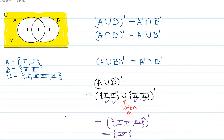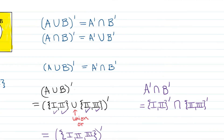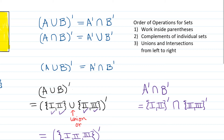If we draw a picture, the complement of A union B is depicted by shading region IV only. Now let's figure out what A complement intersect B complement looks like. We replace A with regions I and II — keeping the complement symbol — and replace B with regions II and III — keeping its complement symbol. We have to do the complements before the intersection, following the order of operations for sets: parentheses first, then complements of individual sets, then unions and intersections.